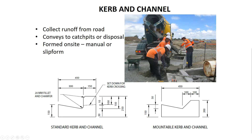The curb and channel casting machine is basically a moving form. Special concrete is dropped into the top of the curbing machine which then forms it into curb and channel as it moves along the line. Note also that there is a string line to guide the operator to make sure that the curb and channel is placed in the right position. The curb and channel is actually laid on a layer of compacted gravel.